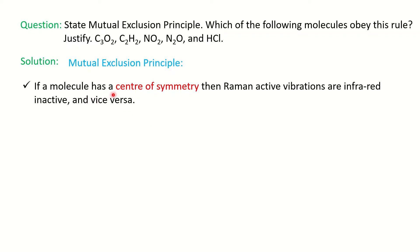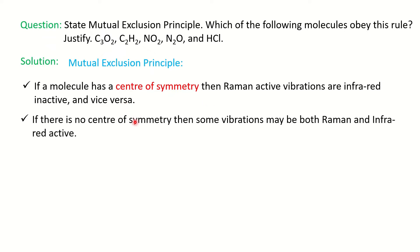If a molecule has a center of symmetry, then the Raman active vibrations will be IR inactive, or vice versa. Otherwise, if there is no center of symmetry in the molecule, then some of the vibrations will be both Raman and IR active. This is the mutual exclusion principle. If asked for a definition, you state this, and then we'll understand it by taking one example.